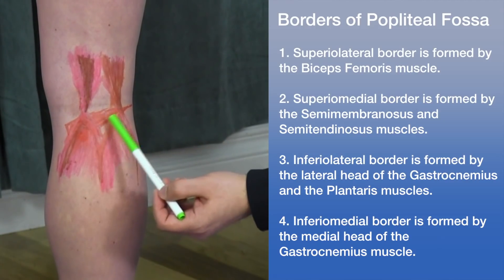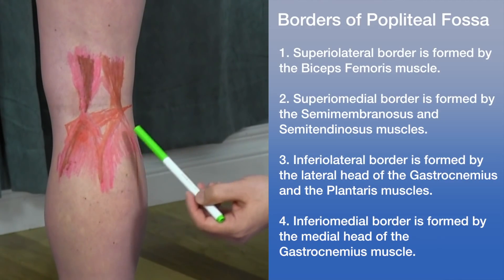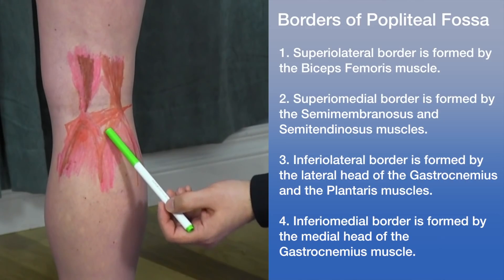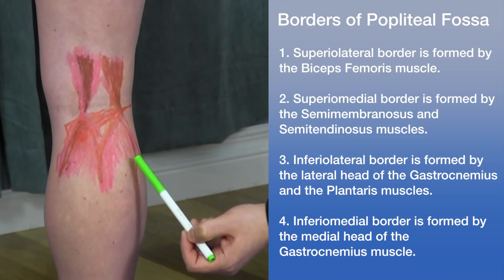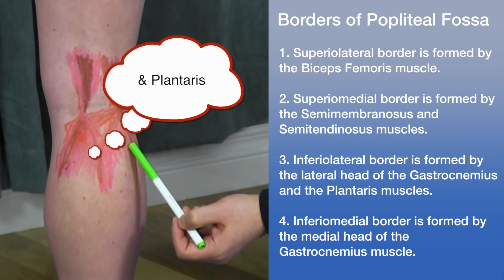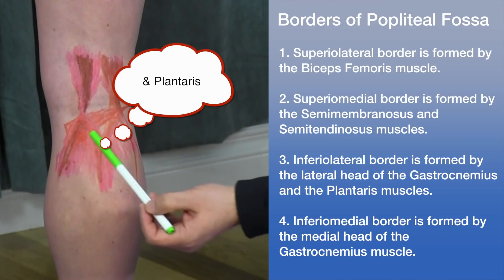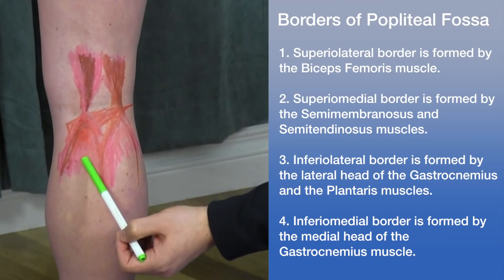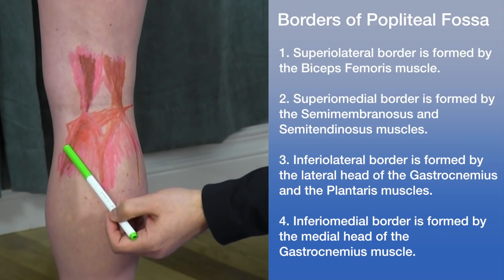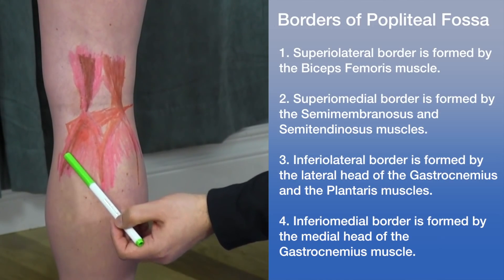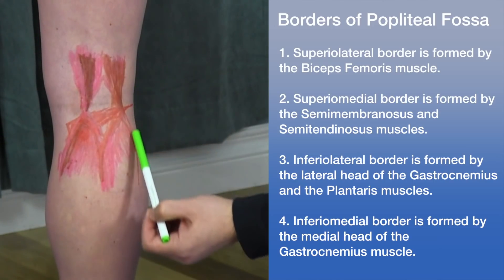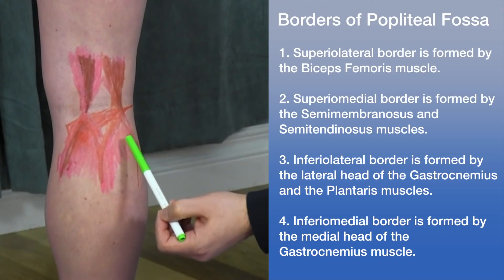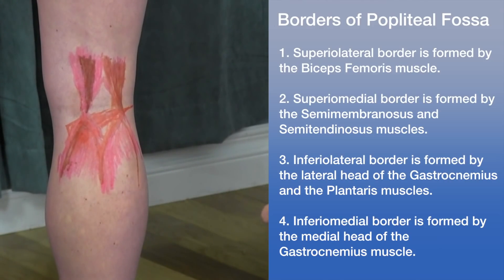Looking at the inferior borders: laterally we have the lateral head of the gastrocnemius, while inferior medially we have the medial head of the gastrocnemius. So all these muscles combined form the borders of the popliteal fossa.